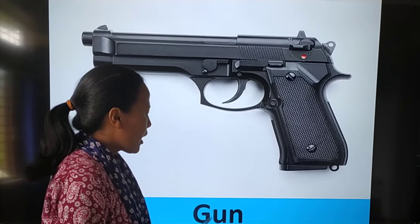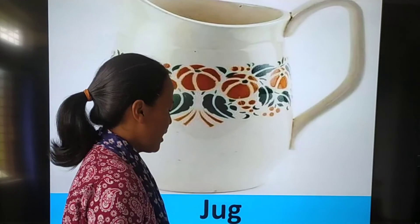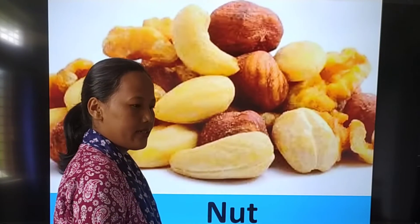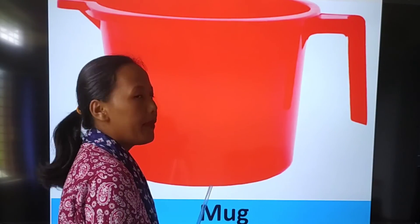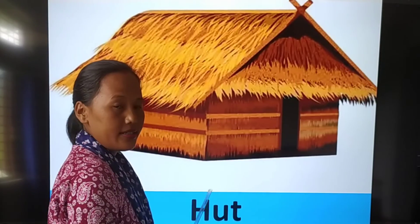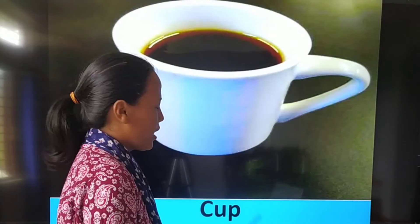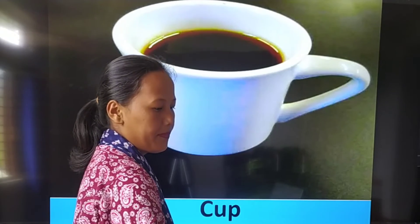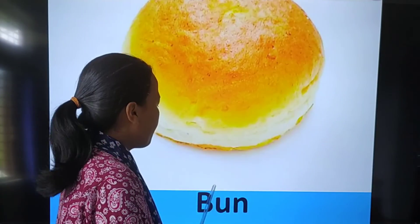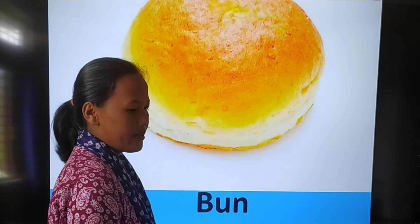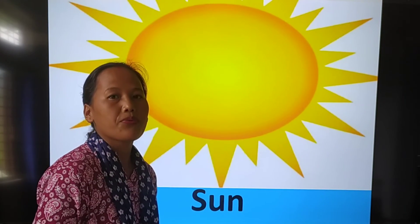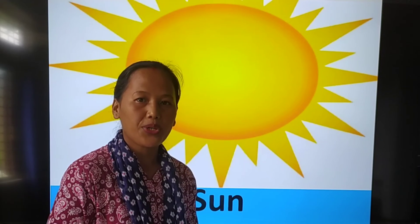Children: gun, jug, nut, mug, nut, cup, mud, bun, sun. These all are the words with the sound of U.